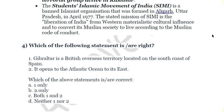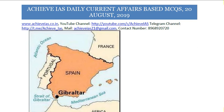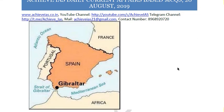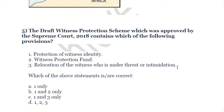The fourth question: which of the following statements is correct? First, Gibraltar is a British overseas territory located on the south coast of Spain. Second, it opens into the Atlantic Ocean to its east. The first statement is correct — Gibraltar is a British overseas territory on the south coast of Spain. The second statement is incorrect — it opens into the Atlantic Ocean, but to its west, not its east. So the answer is A — statement one only. Looking at the map, Gibraltar is clearly on the south coast of Spain, opening westward into the Atlantic.